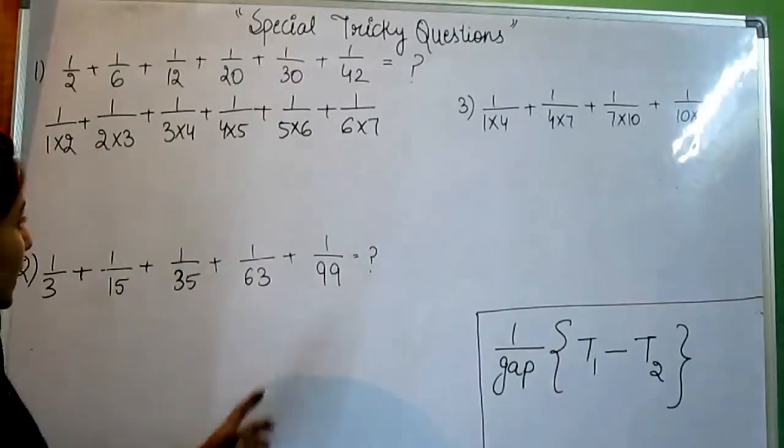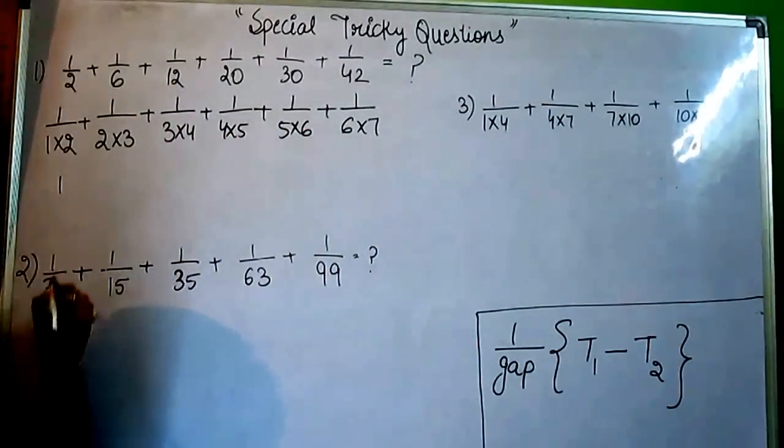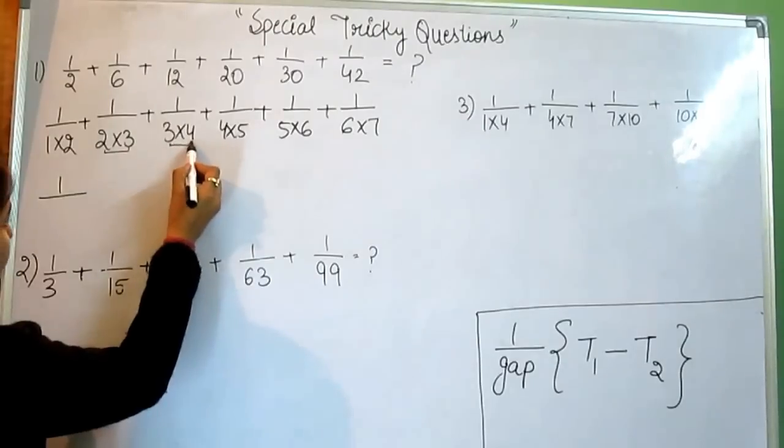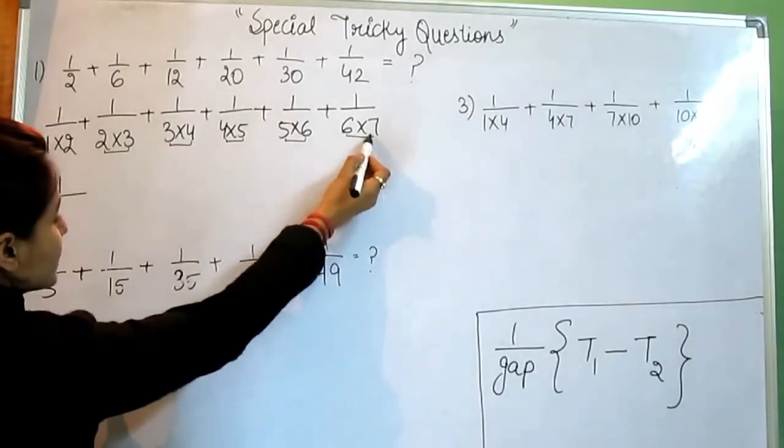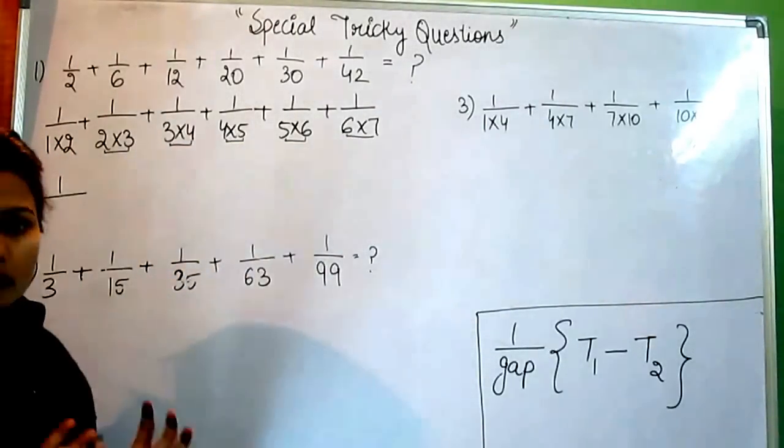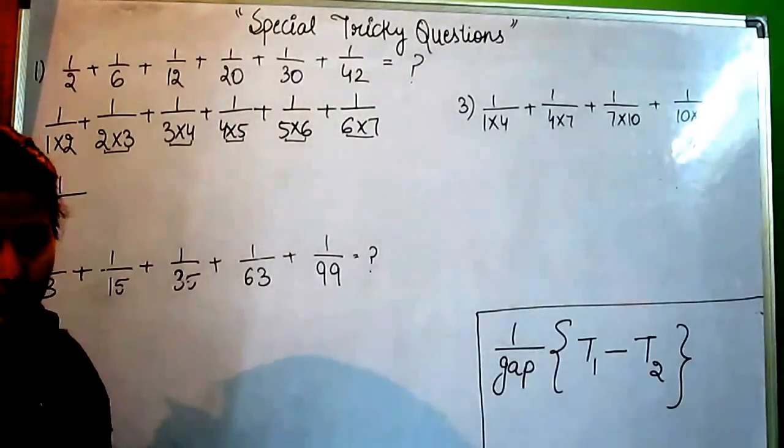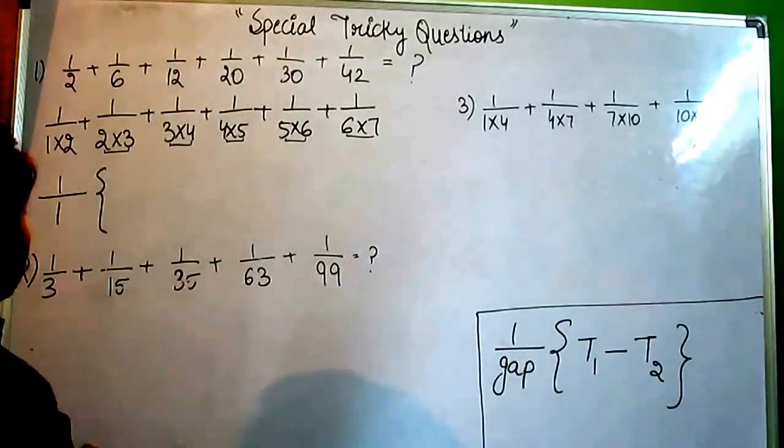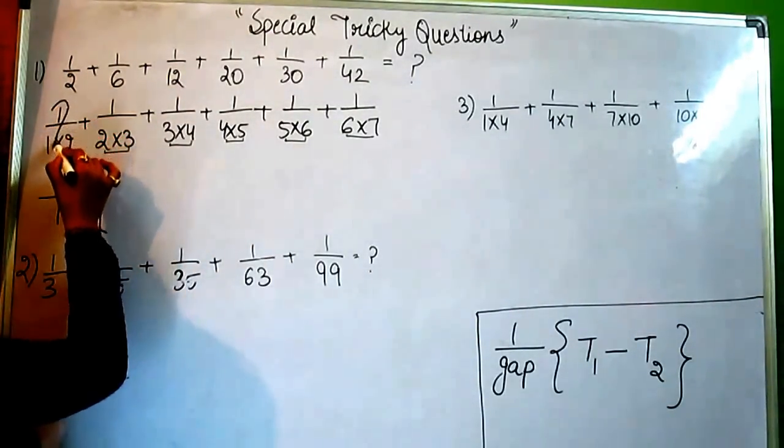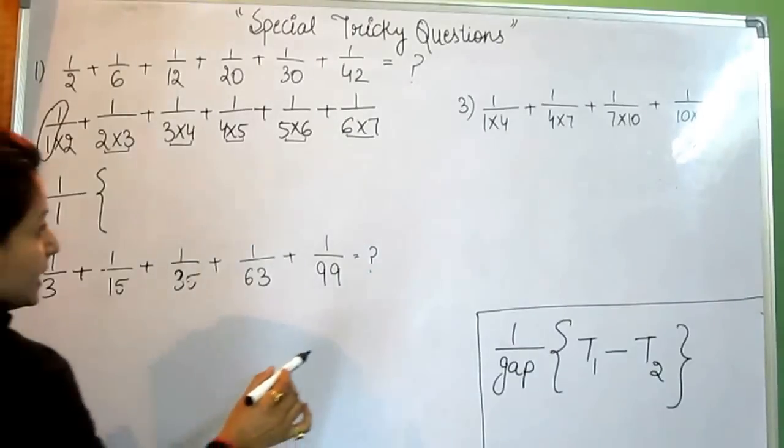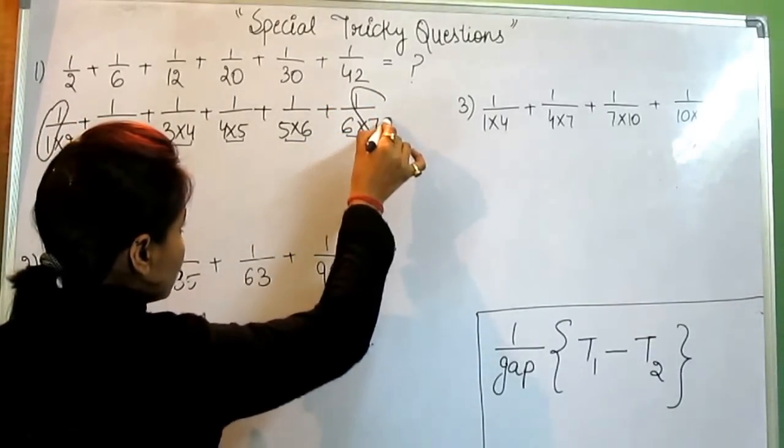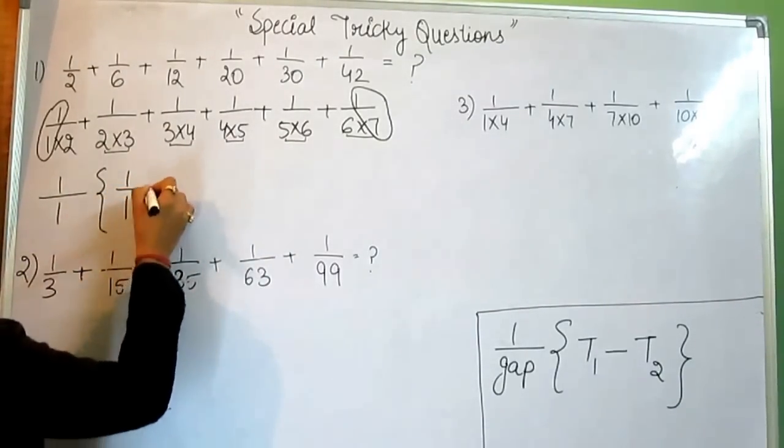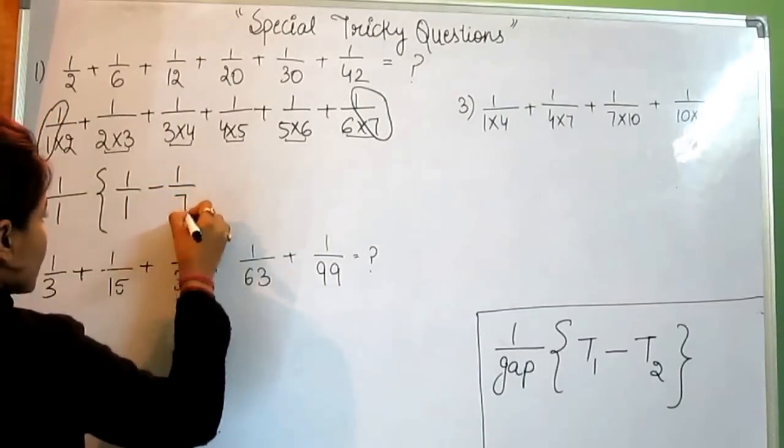So now, the formula is 1 divided by gap. Gap is the number, this is the gap. The gap is 1. All the numbers must have the same gap. The gap is 1, so write 1 here and T1. Now, see carefully. What is T1? T1 is this series, and T2 is this last series, these last numbers.